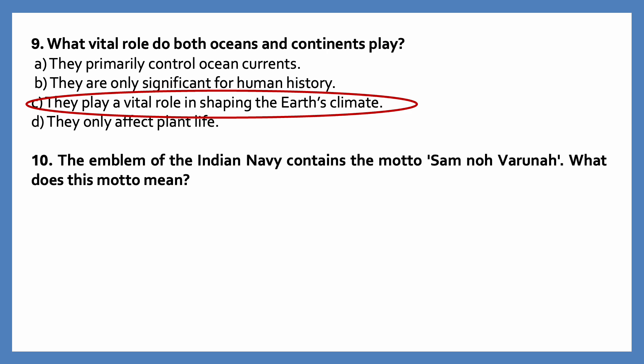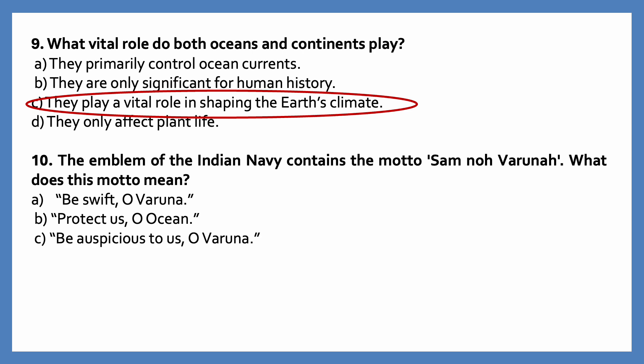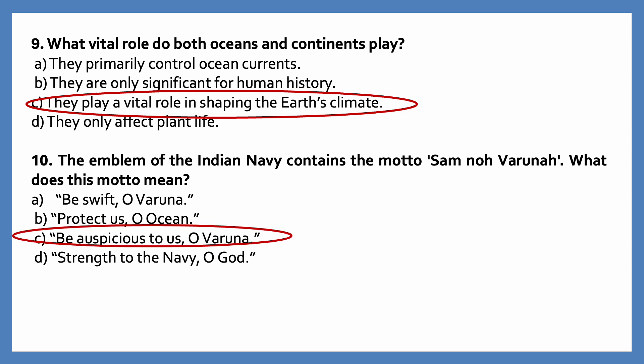The emblem of the Indian Navy contains the motto 'Samna Varuna'. What does this motto mean? Options are: be swift, O Varuna; protect us, O ocean; be auspicious to us, O Varuna; strength to the Navy, O God. The correct answer is be auspicious to us, O Varuna.